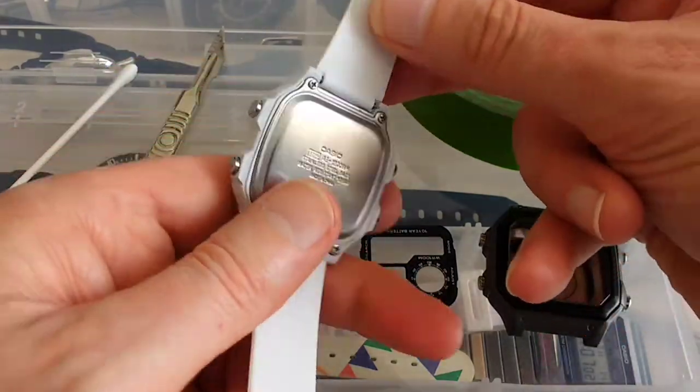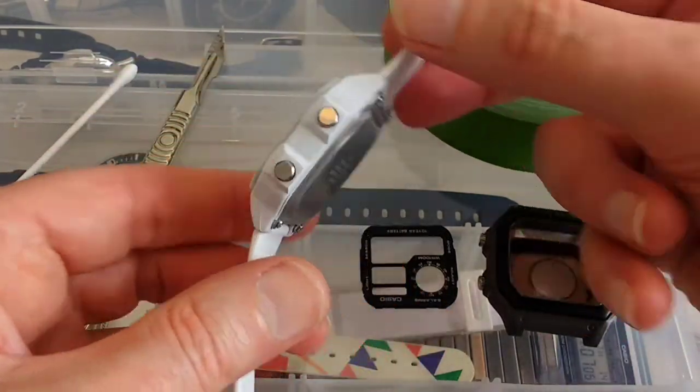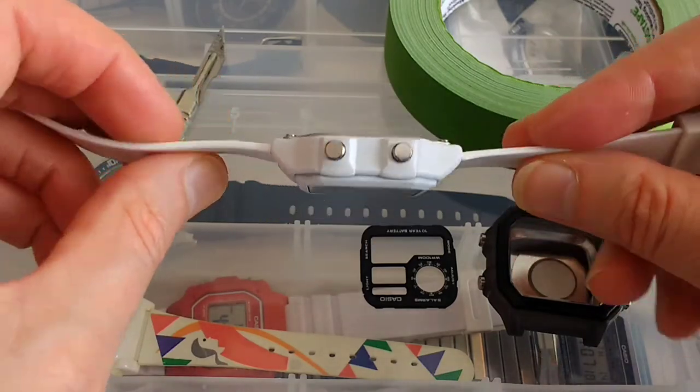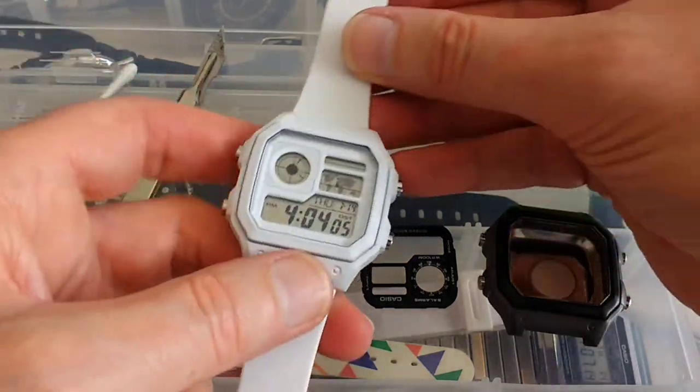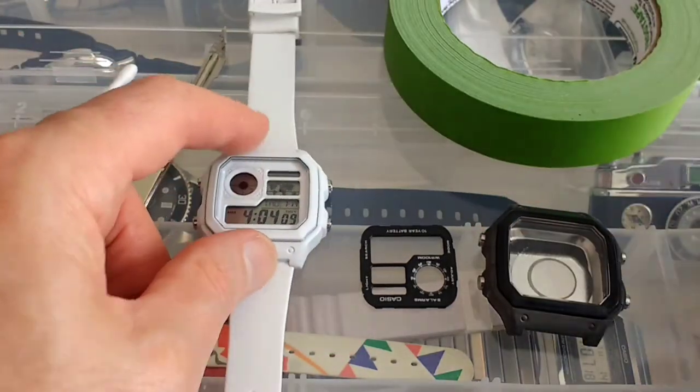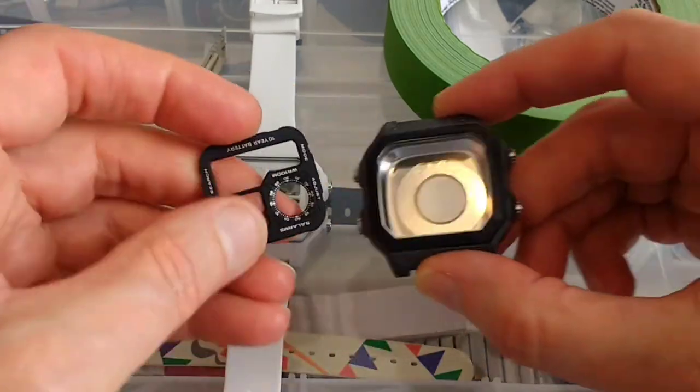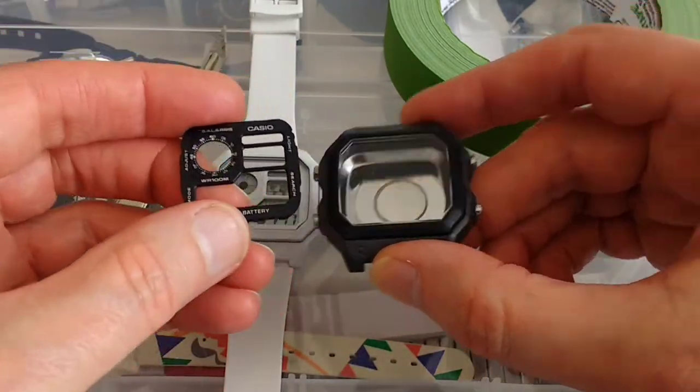Hello everyone. This is a Casio mod that doesn't need any extra parts, just using some masking tape and white spray paint. And here we have a distinctly second-hand Casio in its standard dark grey color.